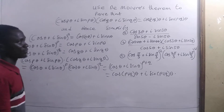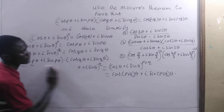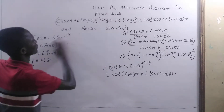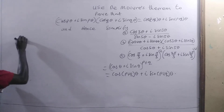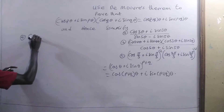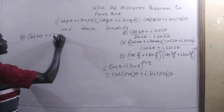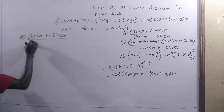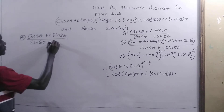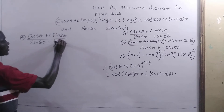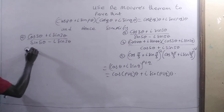Now let's simplify the first example. We have to simplify cosine(3θ) + i·sine(3θ) divided by cosine(5θ) − i·sine(5θ).